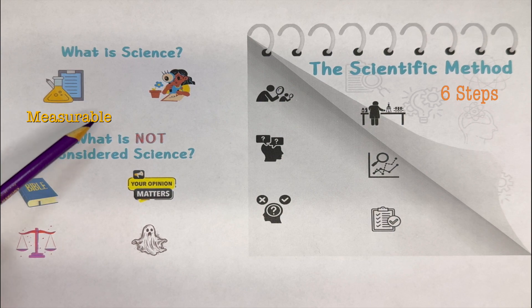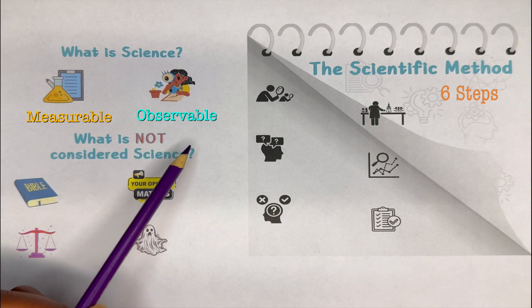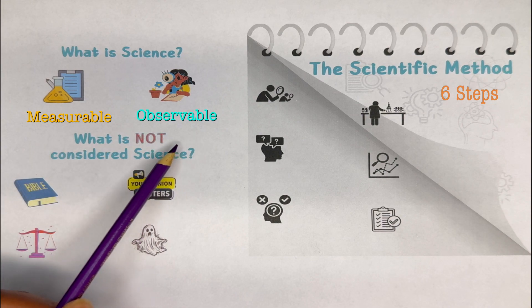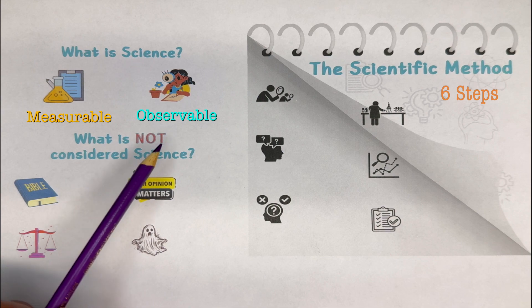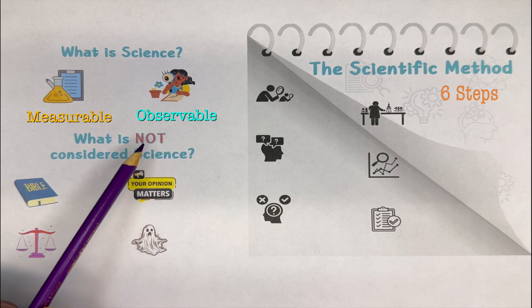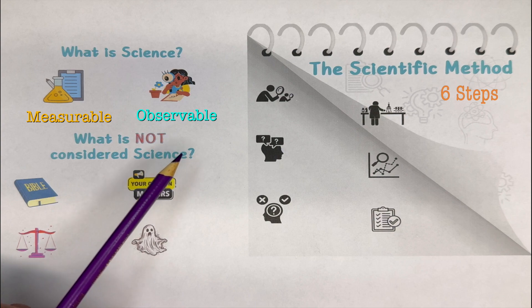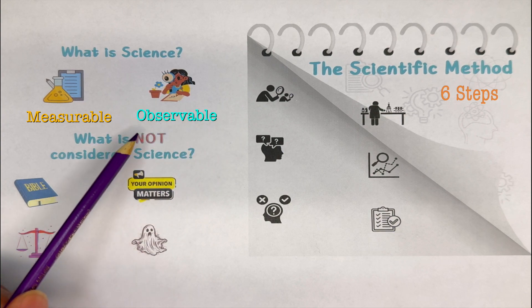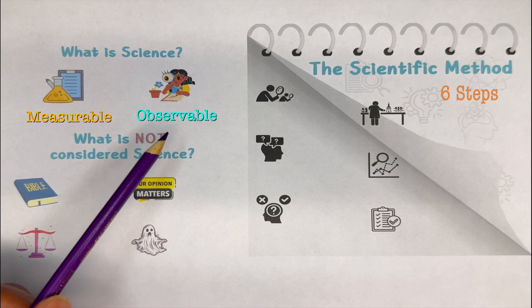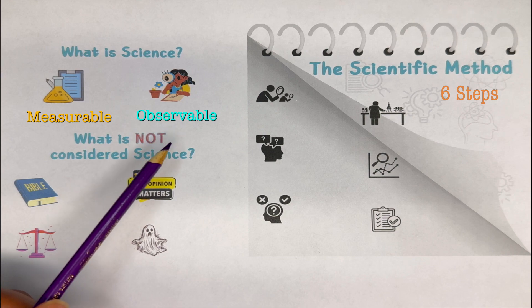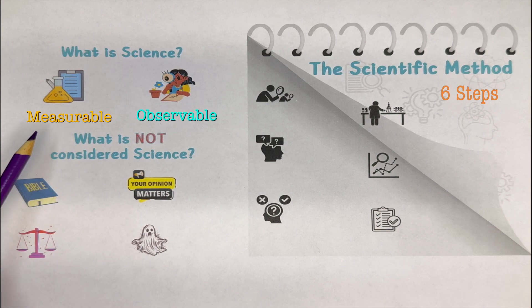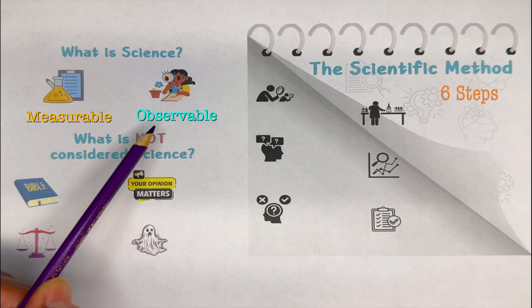Other than being measurable, we also want to make sure that it is observable. Observable means we want to be able to see it in some type of way, whether through our naked eye or a microscope. We have to be able to observe it. So science will study things that are measurable and observable.